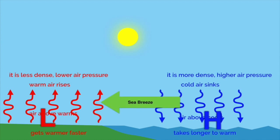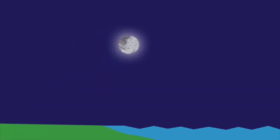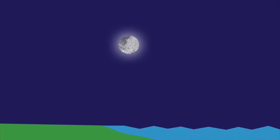Sea breezes occur during the day. Air over the water is cooler than the air over the land. The opposite conditions occur at night. In this situation, the specific heat still remains the same — the water still has a high specific heat, and the land still has its low specific heat. But because of that, the land is going to lose all of the heat it had during the day, and the water is going to retain it. So it's pretty much the opposite of what we just looked at.